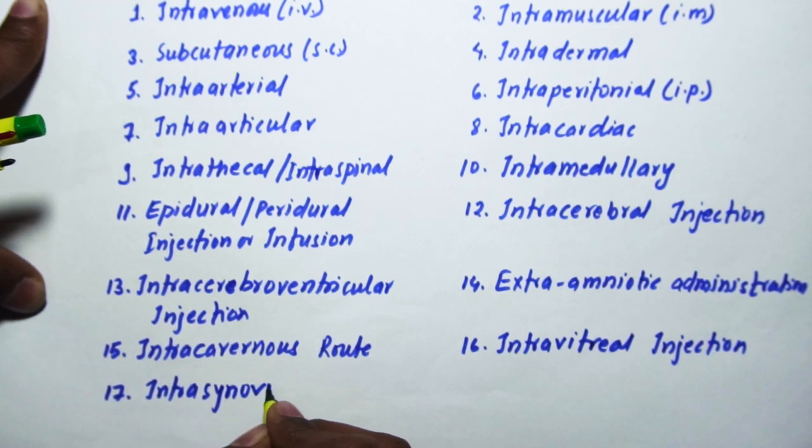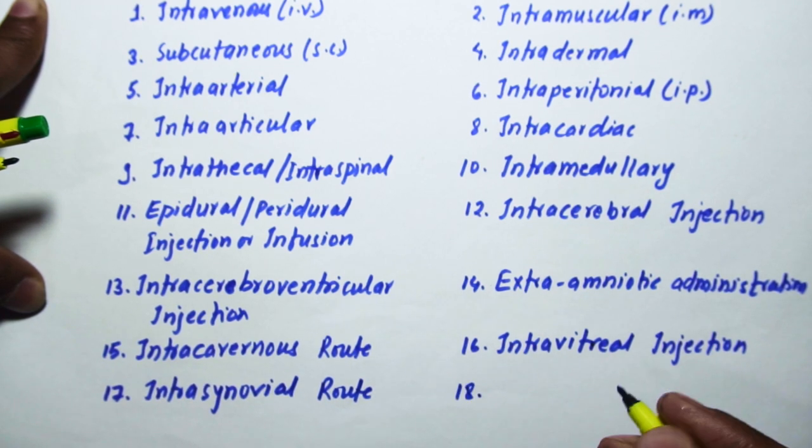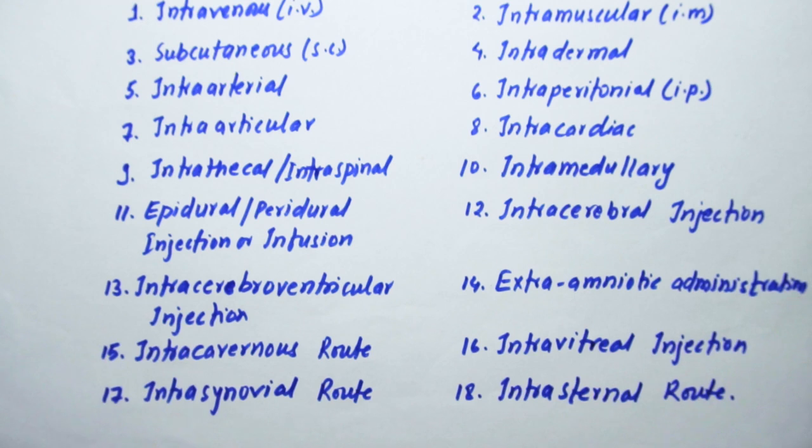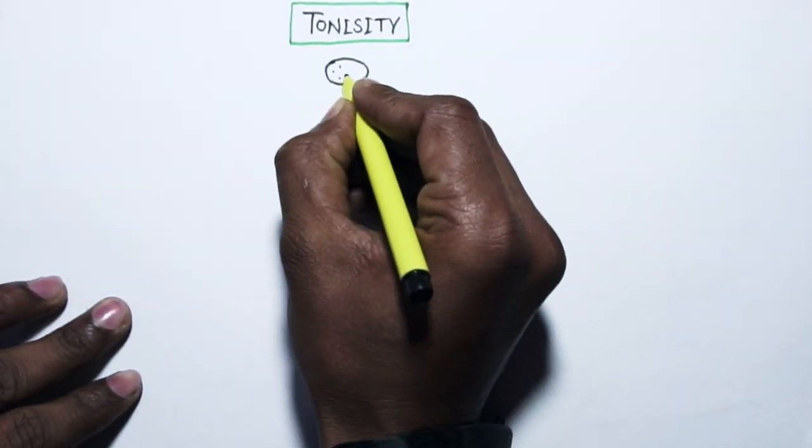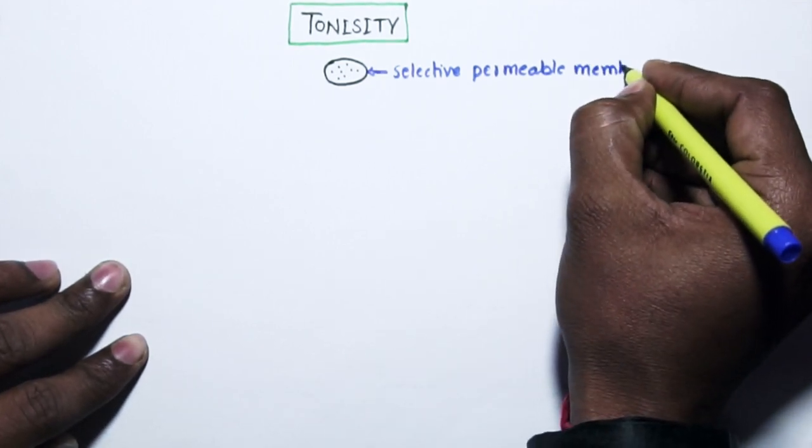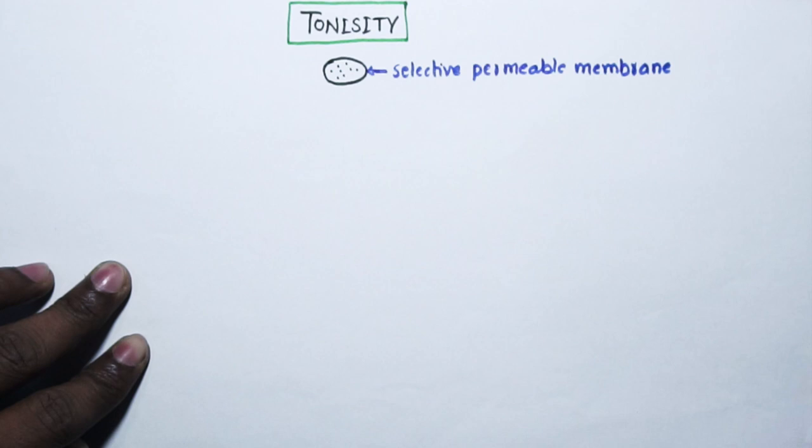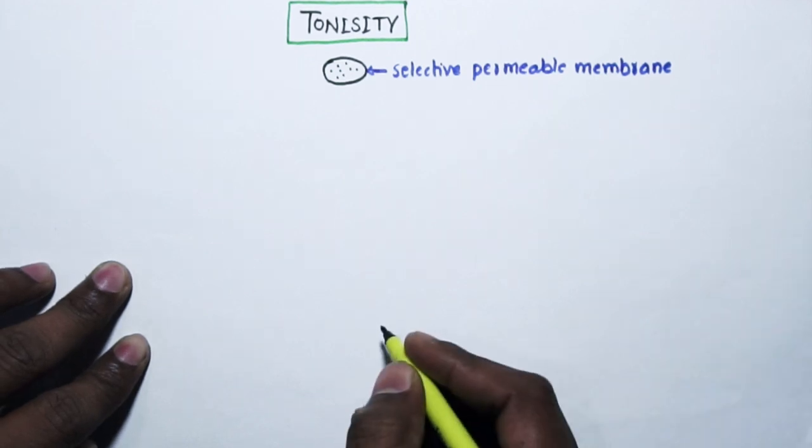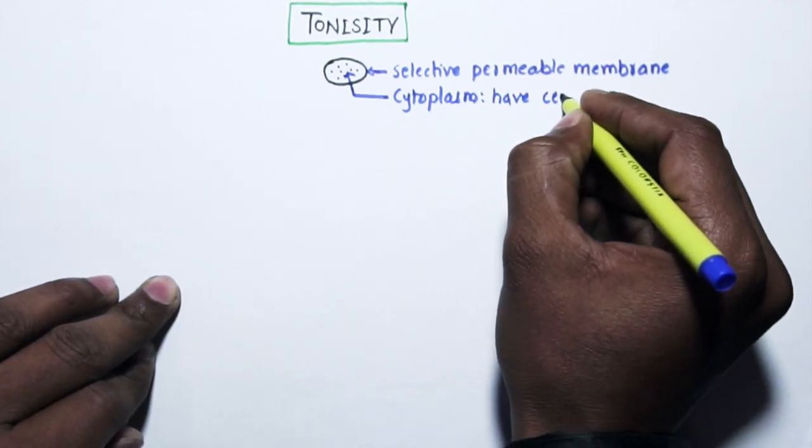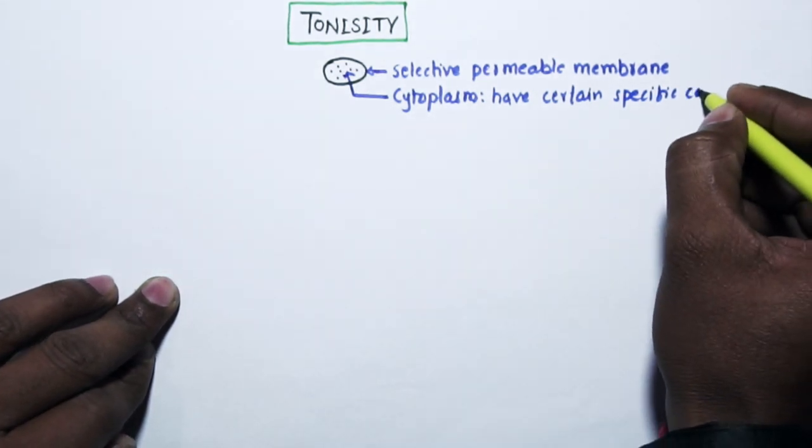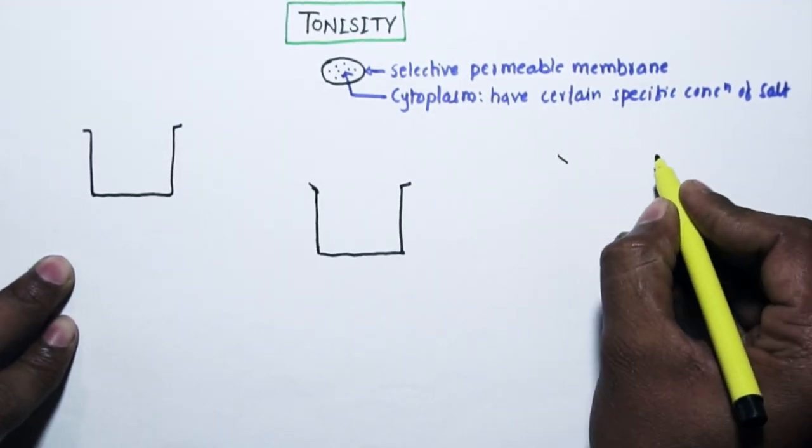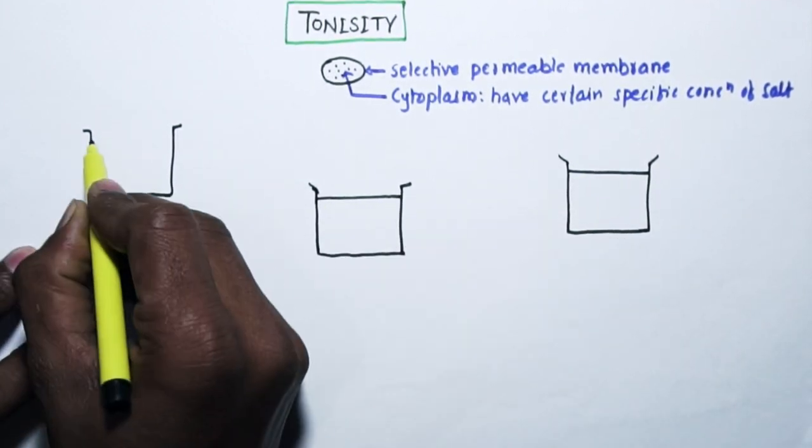Now we will discuss tonicity, which is very important in case of large volume parenterals. Suppose this is a normal cell with selective permeable membrane. This membrane will selectively allow certain ions or electrolytes to pass through the cell membrane. We also know that the cytoplasm has certain specific concentrations of salts like sodium chloride, potassium sulfate, etc. Suppose there are three different salt solutions with different concentrations, and a normal cell is placed in each of them.